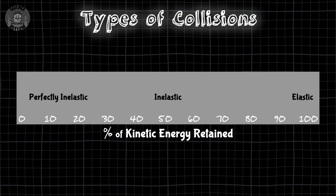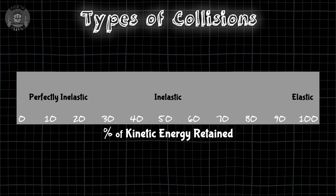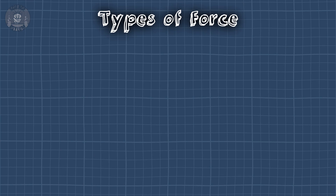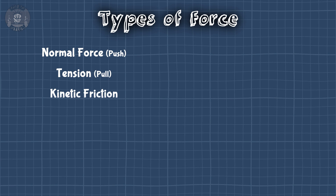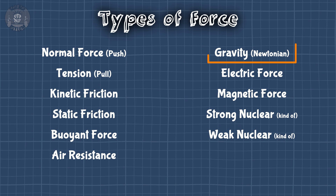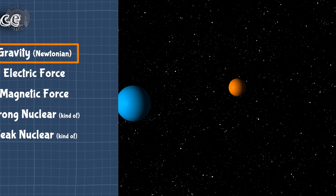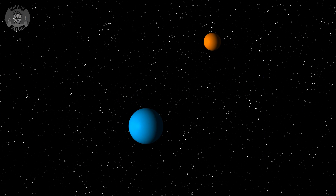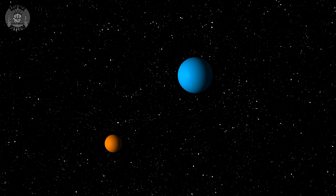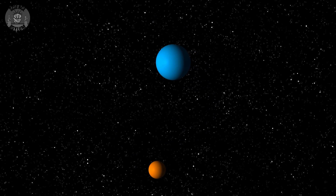Misconception number one: these so-called collisions don't require physical contact. All that matters is that the objects exchange forces. Sure, this collision involved physical contact, but there are many forces in this universe and not all of them require physical contact, like Newtonian gravity for example. Orbits are a kind of continuous collision — you can model this motion using momentum exchanges and it works.